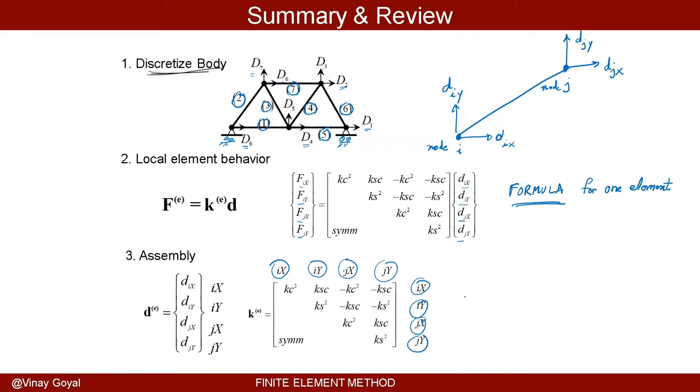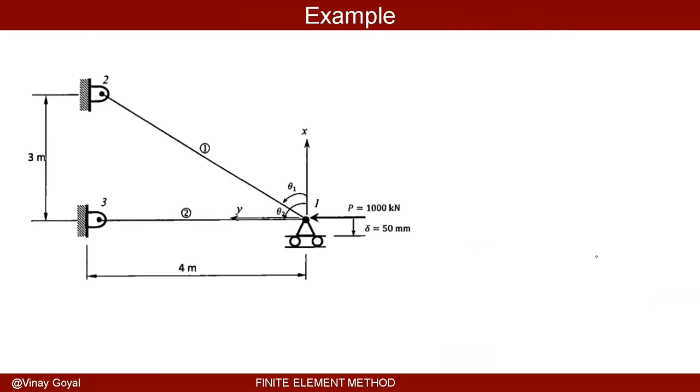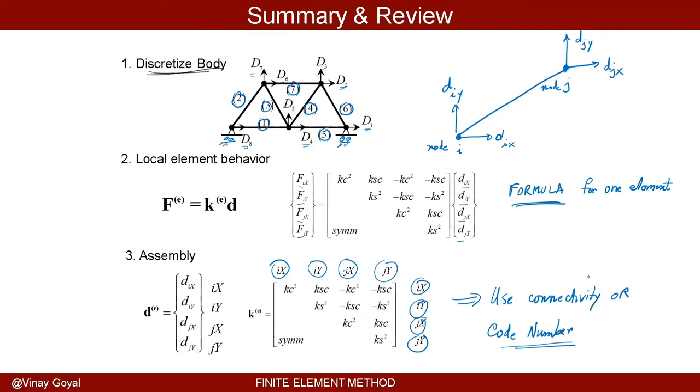And the connectivity is given by assigning these codes or these values to each row and each column. And by using these code numbers, we can assemble the global stiffness matrix. And in the global stiffness matrix, we can solve for the displacements by inverting this system. Again, you need to verify that it's invertible, as we did for the case of the spring.